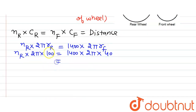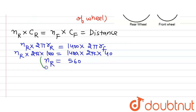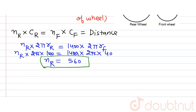On solving, 2π cancels out from both sides. We are left with N_rear × 100 = 1400 × 40, which gives N_rear = 1400 × 40 ÷ 100 = 560. So the number of revolutions by the rear wheel is 560 revolutions. This is our answer.